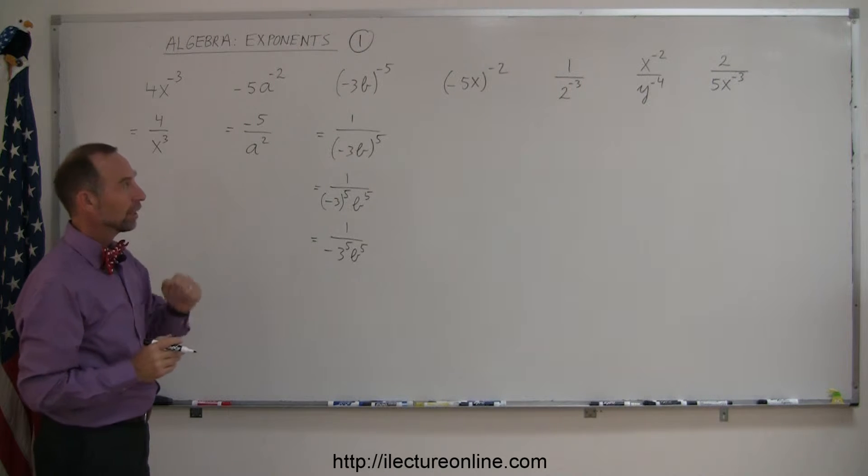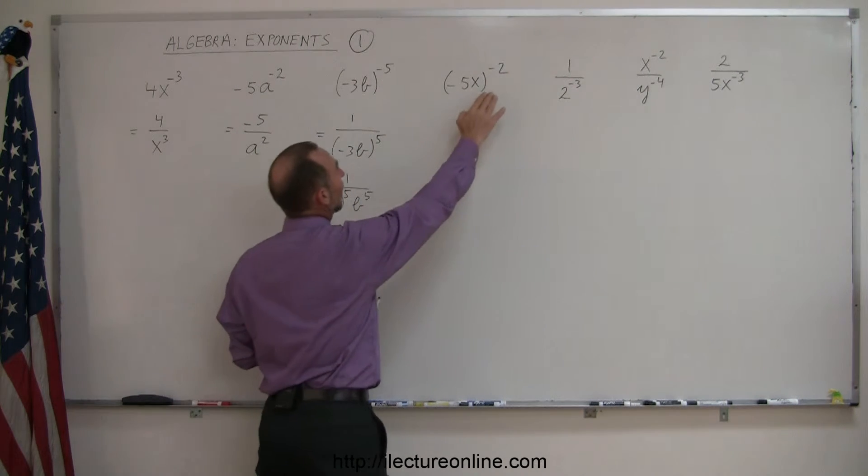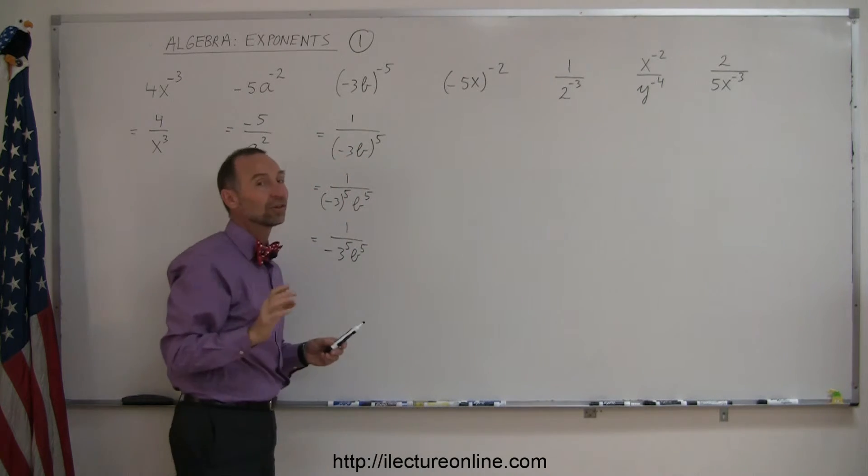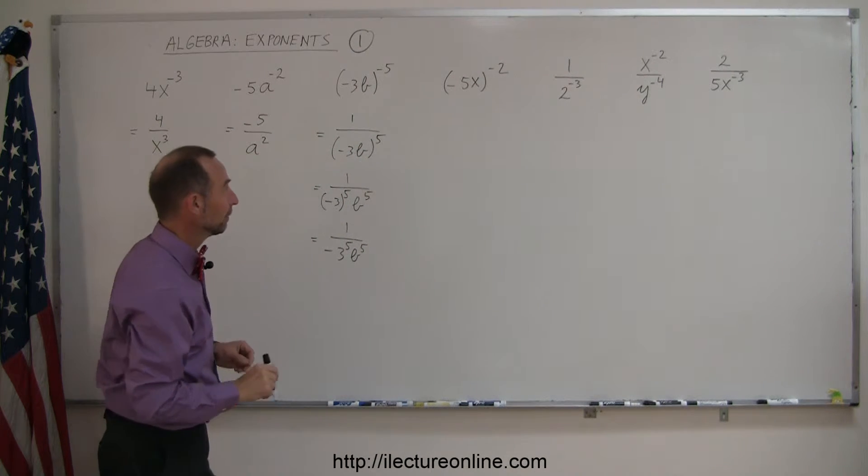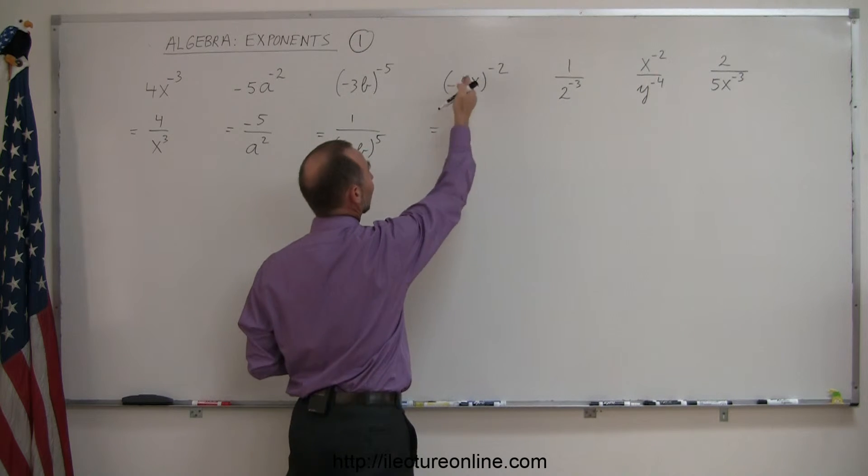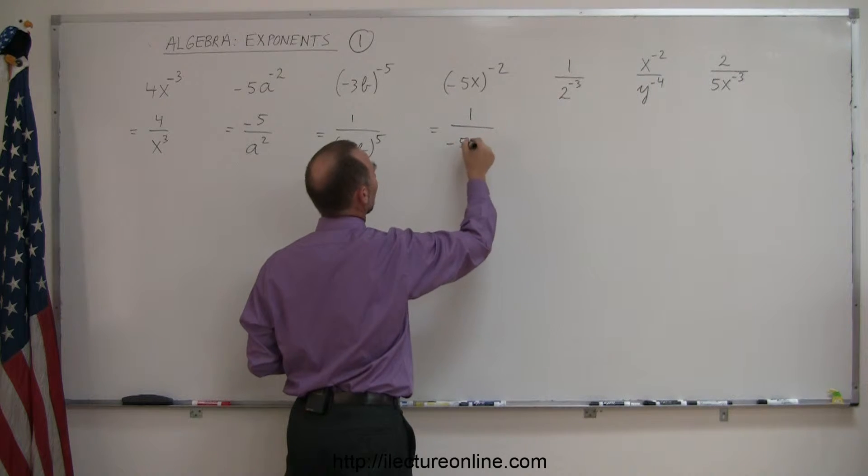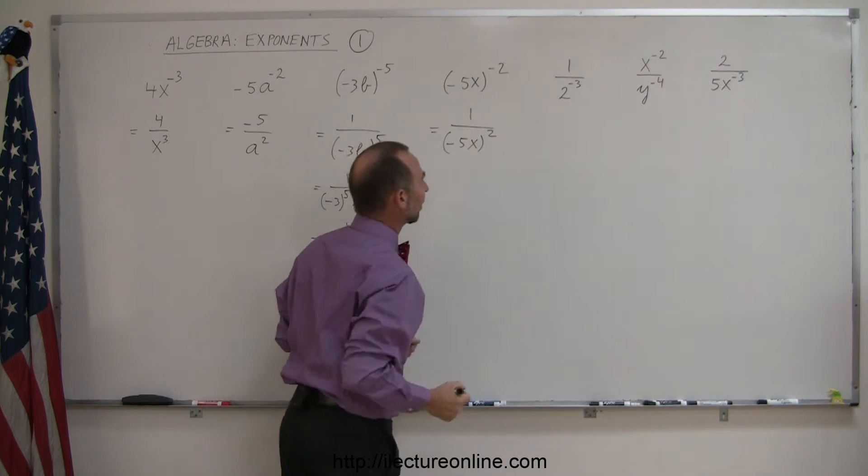Okay, over there, we have something that's slightly different than what we saw before. Here we have an even negative exponent. You can see how that changes things just a little bit. First of all, since we have parentheses around this, the negative 2 applies to everything inside the parentheses, so we can write 1 over negative 5x to the positive 2nd power.